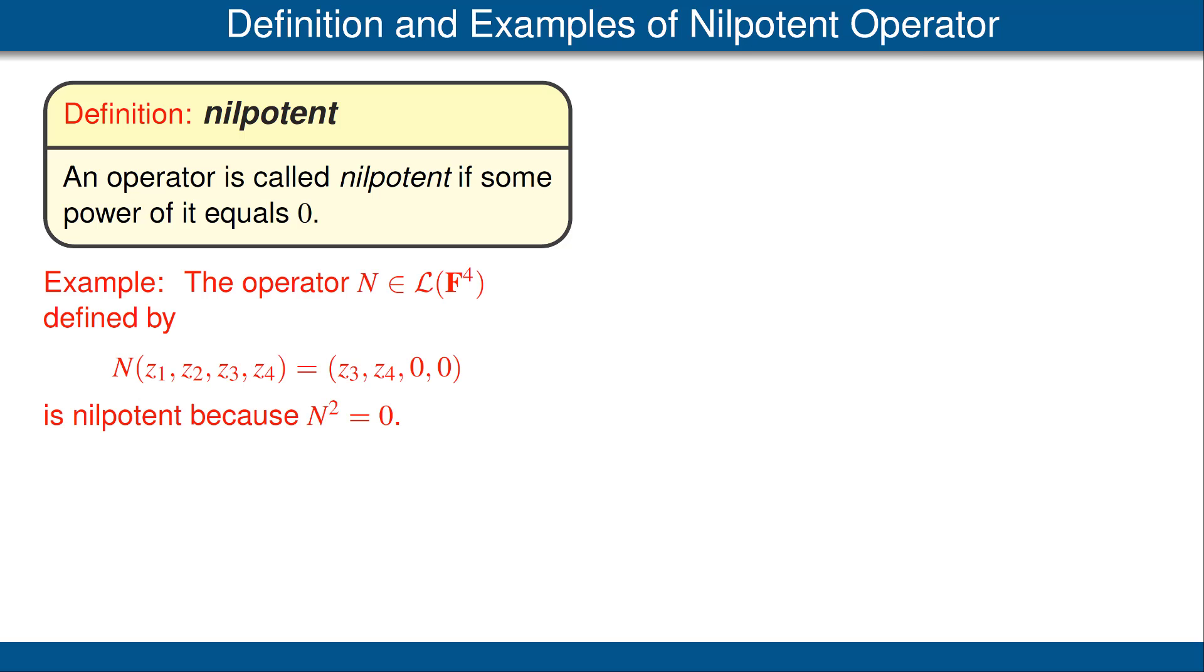For our first example, consider the operator N on F⁴ defined as you see here. This operator is nilpotent because if we square it, we get the zero operator.